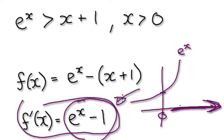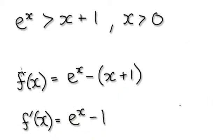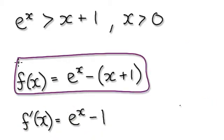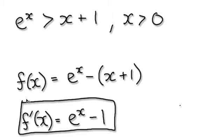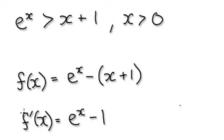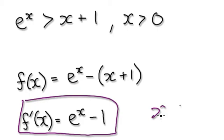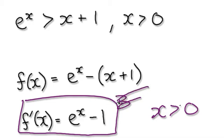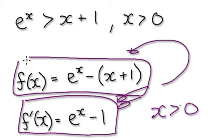Now if f prime is always positive, then it means that the original function f must always be climbing. Because we realize that for x bigger than zero, f prime will always be a positive number. If f prime is always positive, it would imply that the original function must always be climbing.